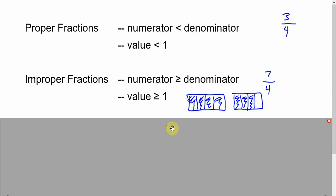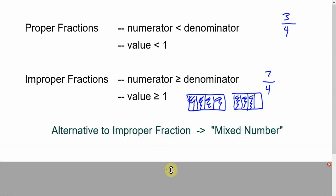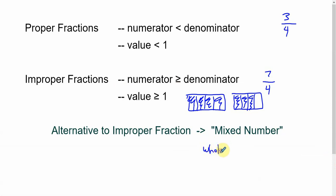The one place where things can be different if you want them to be is that when you do have an improper fraction there's another way to write it. And that's called a mixed number. So the idea of a mixed number is a whole number and a proper fraction.